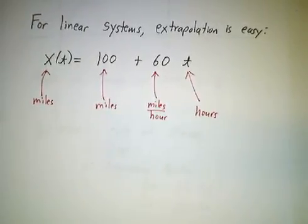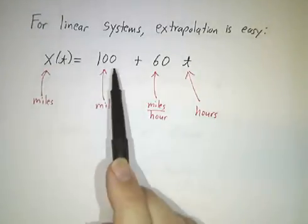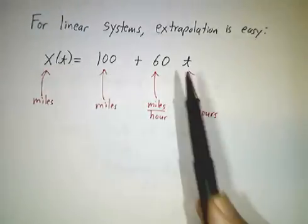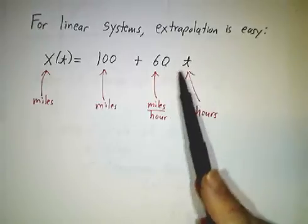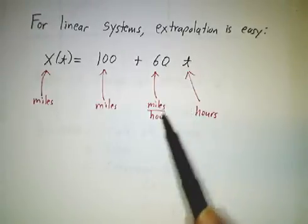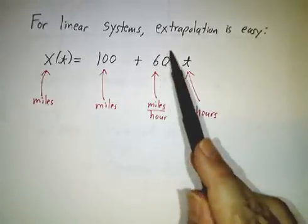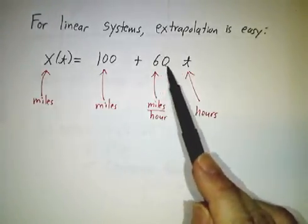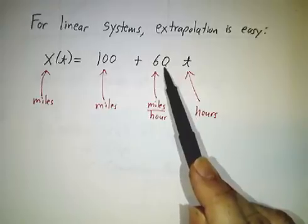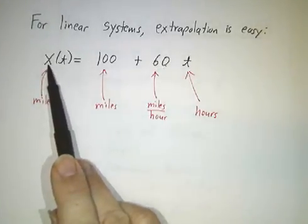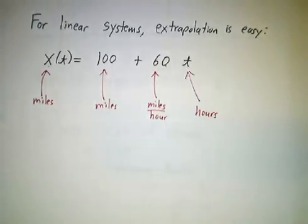And you should be careful with units. If this is in miles, then this has got to be in miles, and 60t has to be in miles. 60 is in miles per hour, t is in hours. The rate of change is 60, not the number 60, but 60 miles per hour. It's output, that is miles, per input, that is hours.